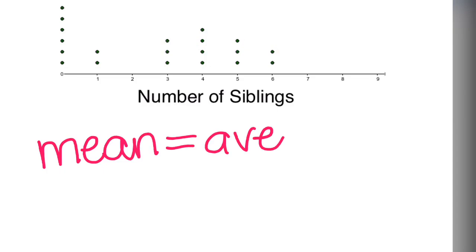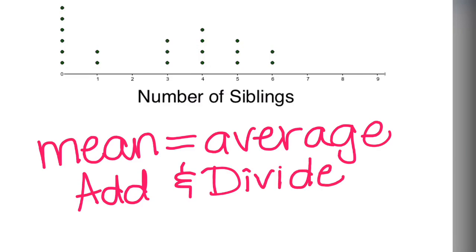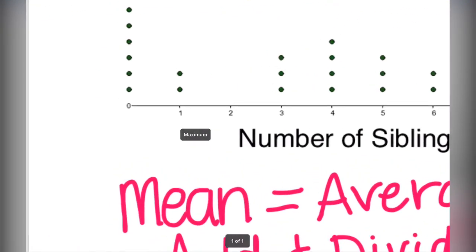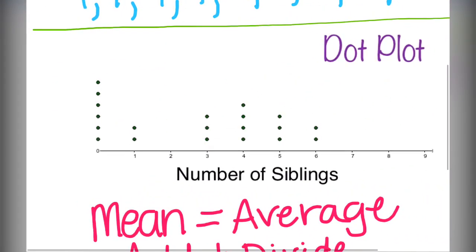Now we have the mean. The mean is known as the average which you find by adding and then you divide. So we've listed out all of the data again but we're going to go ahead and find the total sum of all the data.